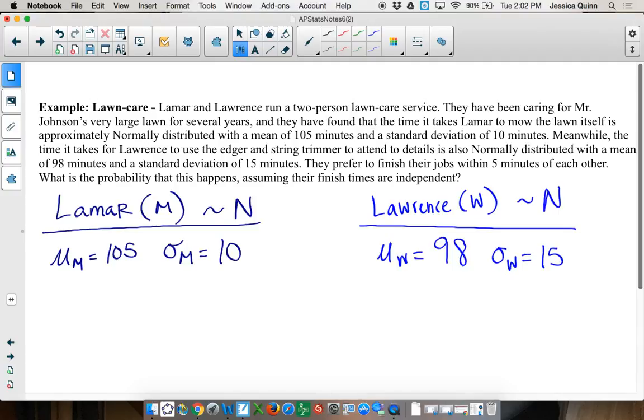I get it. So this question is asking us about how often they finish within five minutes of each other. I have two separate distributions. Lamar has his own distribution of time it takes. Lawrence has his own distribution of time it takes. What are we going to do with these two distributions in this problem? Add them or subtract them?